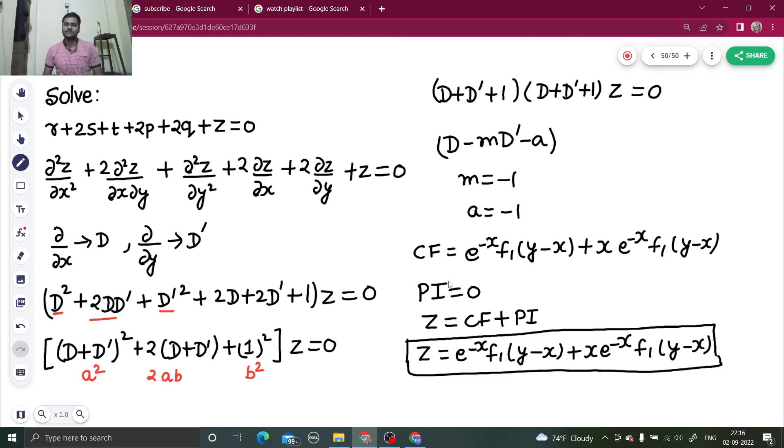Because you know that is of the form e power a1 x f1 of y plus m1 x, plus e power a2 x f2 of y plus m2 x. Because the second one was repeating, I multiplied that by x.